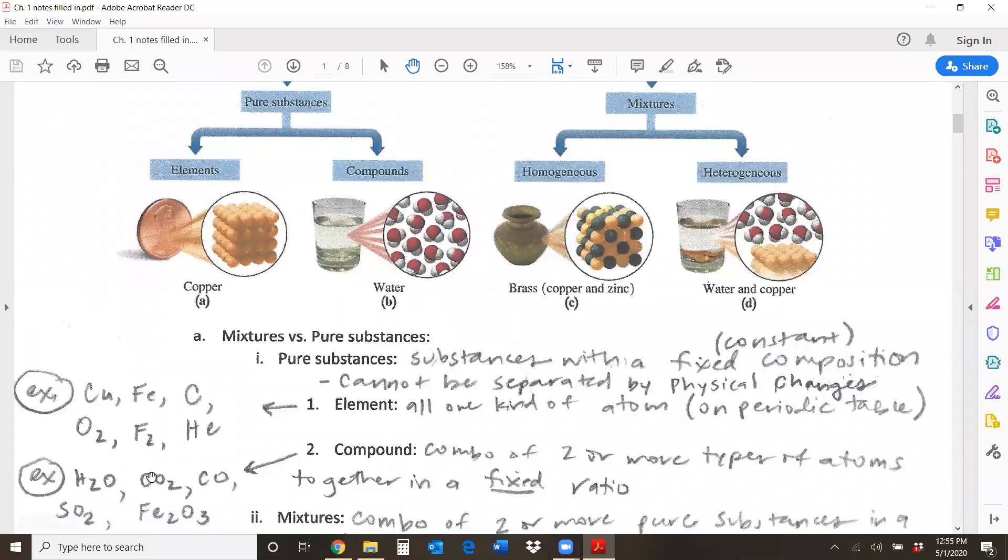But a couple of compounds here are water, because it's always made up of two H's and one O. Carbon dioxide, because it's one carbon and two oxygens. Carbon monoxide, one and one, SO2, Fe2O3. So you have these set ratios of atoms that are bound together, and they are making up what's called a compound. Once again, a compound will be the same no matter what lab you find it in. So a compound and an element, those are your pure substances.